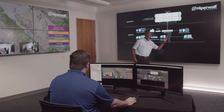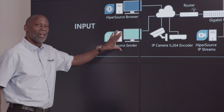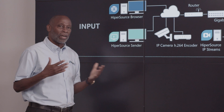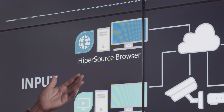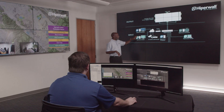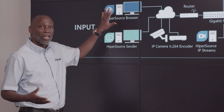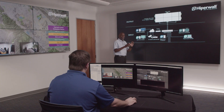Now let's talk about the actual sources. First, we'll start with the Hypersource Sender. Hypersource Sender does a screen scrape of whatever's on your desktop and then throws it to the wall. It runs on Windows, Linux, and Macintosh platforms. We also have Hypersource Browser, which is somewhat of an extension of Hypersource Sender. This browser allows you to put multiple browser tabs inside a single application at any resolution, using only one PC to have multiple pieces of browser content on the wall.